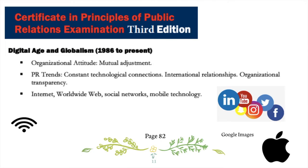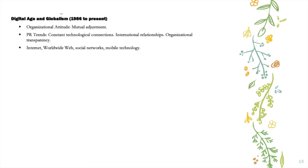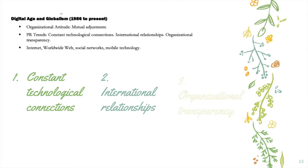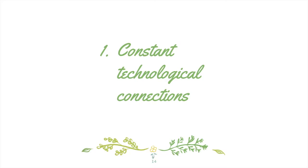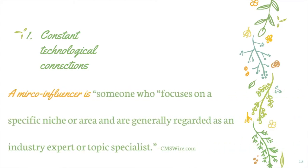Now that we've determined that we're practicing public relations in the era of digital age and globalism, let's move on to our second learning target. It's time to take a look at three main trends we can expect to encounter. We will be taking a look into constant technological connections, international relationships, and organizational transparency. Within the first highlighted trend of constant technological connections, we are going to use the example of micro-influencers. According to CMSWire.com, a micro-influencer is someone who focuses on a specific niche or area and are generally regarded as an industry expert or topic specialist.